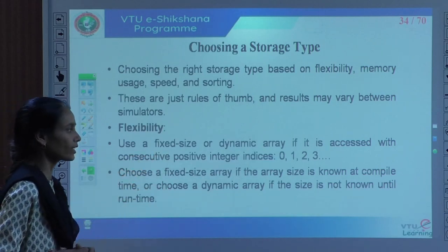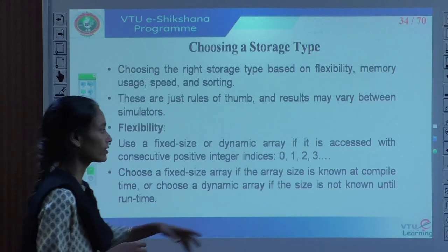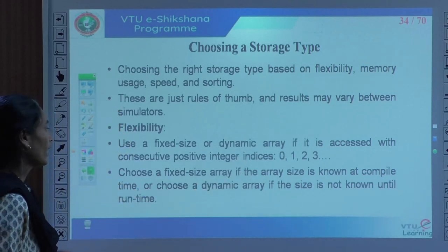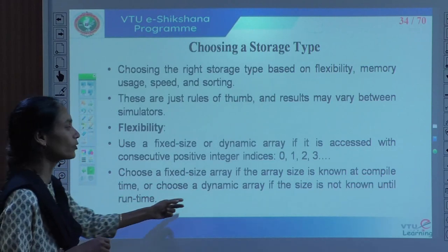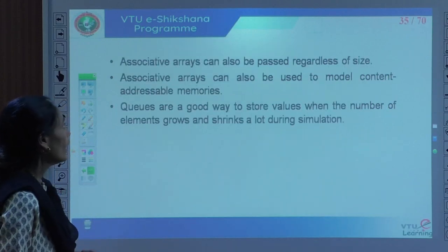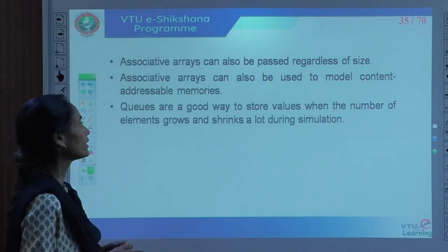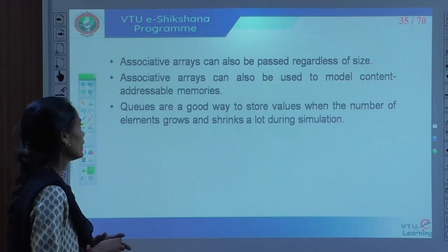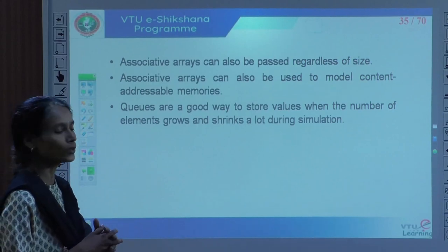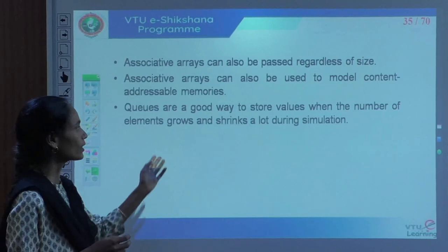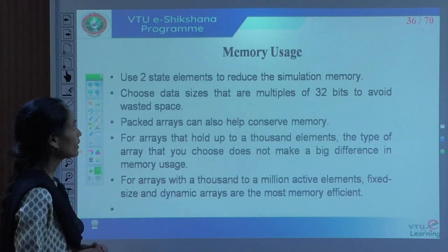With respect to flexibility, use a fixed size or a dynamic array if it is accessed with consecutive positive integer indexes 0, 1, 2, 3 and so on. Choose a fixed array if we know the dimension of the array; if not, it is better to go for the dynamic array. Associative arrays can also be passed regardless of size and can be used to model content addressable memory (CAM). Queues are a good way to store values when the number of elements grows and shrinks a lot during simulation — if there is variation with addition or deletion, it is better to go with queues.